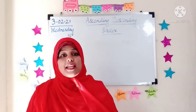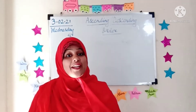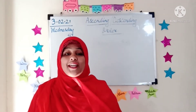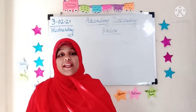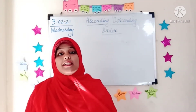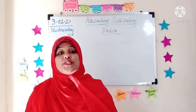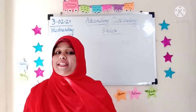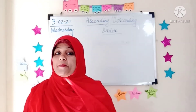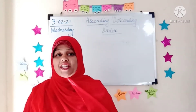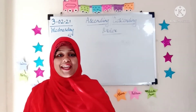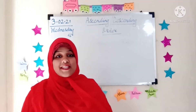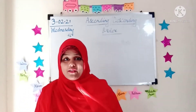Today's date is — please check it on the board — 3rd of February and the year is 2021. And which day is today? Yes, today is Wednesday. All right.